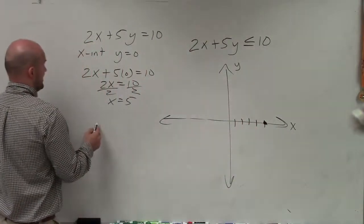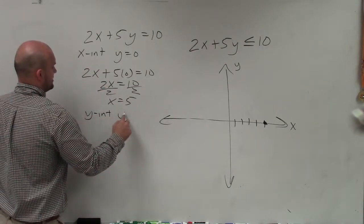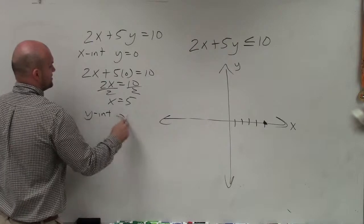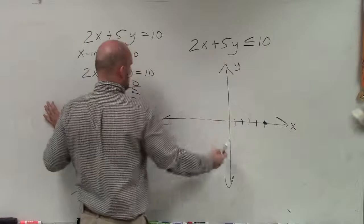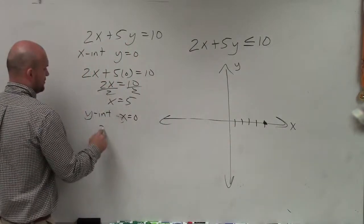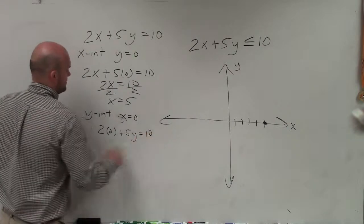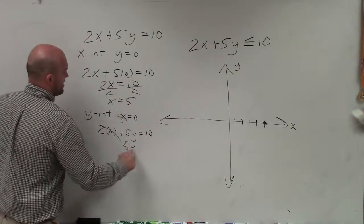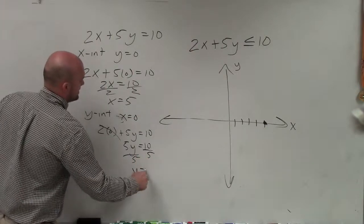Then I need to go ahead and find the y-intercept. So for the y-intercept, my x-value is equal to 0. Any point where the graph crosses the y-axis, the x-value is 0. So therefore, I plug 0 in for x plus 5y equals 10. That goes to 0. So 5y equals 10, divide by 5, y equals 2.